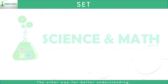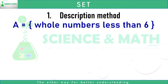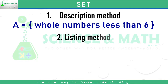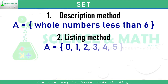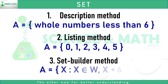Let's write a set in three different ways. Description method — for example, A equals the set of whole numbers less than 6. In listing method, it becomes A equals the set of 0, 1, 2, 3, 4, 5. And in set builder method, it becomes A equals the set of X such that X belongs to whole number where X is less than 6.